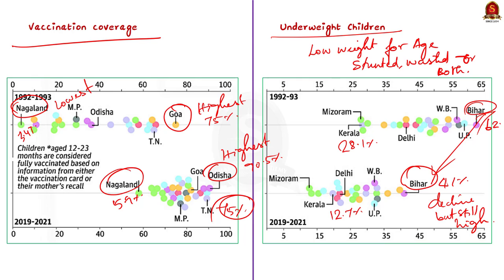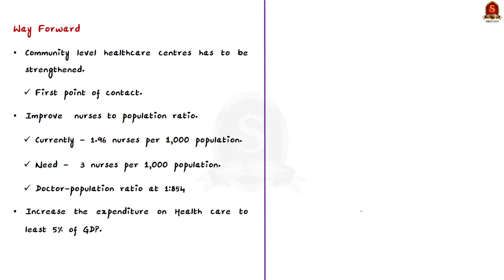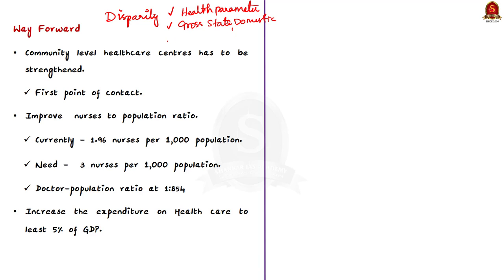So that's about the data point. Now let's see how we can use this data in the mains question. From all these data we can understand there is widespread disparity among states — wide variation in health parameters like IMR, life expectancy at birth, vaccination coverage, and underweight children. There are also disparities in GSDP, incomes, and education parameters like adult literacy and gross enrollment ratio. You can use today's data in the introduction to justify that regional disparity is hindering India's vision of health for all. After the introduction, you can give suggestions to address these disparities.